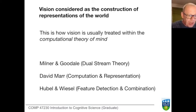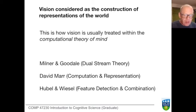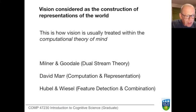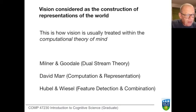This orthodoxy cannot claim to tell the whole story. Here we'll meet such well-known theories of vision as the dual stream theory of Milner and Goodale, the theory of computation and representation of David Marr, and the feature detection work of Hubel and Wiesel — work that won the Nobel Prize. So let's first ask what's going on when we talk about mental representations.